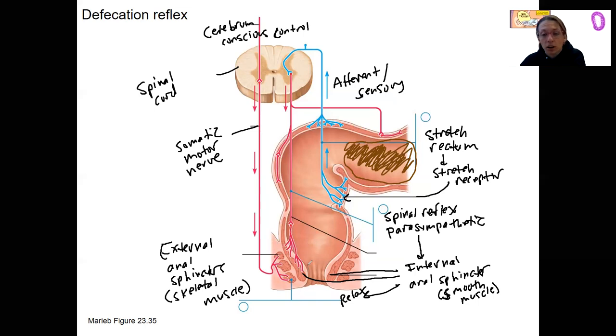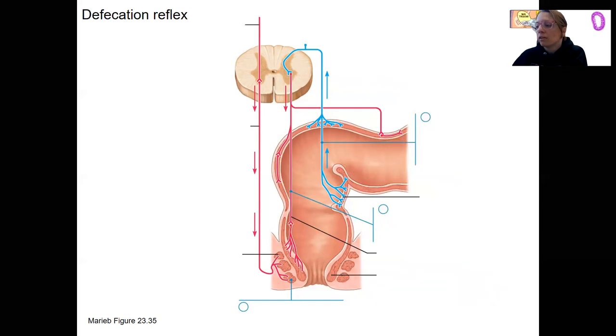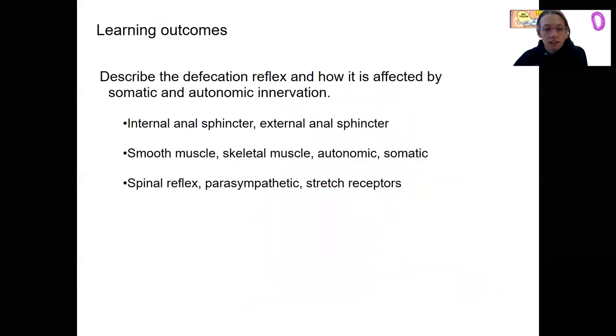Pretty cool example of an autonomic nervous system reflex in conjunction related to a conscious control over that reflex. It's kind of like just stopping the knee-jerk reflex, but much more interesting, I think, in terms of body functions. All right, this is what we just did.